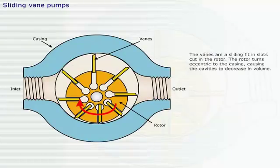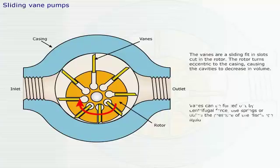The vanes are a sliding fit in slots cut in the rotor. The rotor turns eccentric to the casing, causing the cavities to decrease in volume. Vanes can be forced out by centrifugal force, use springs, or utilize the pressure of the discharge liquid.